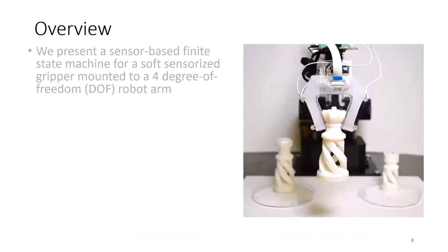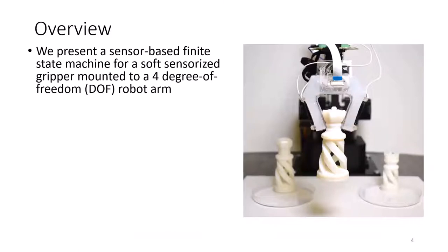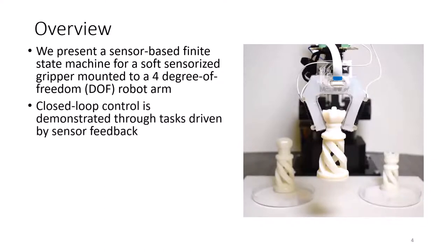In this work, we present a sensor-based finite state machine for a soft sensorized gripper mounted to a four-degree-of-freedom robot arm. To give a quick definition, a finite state machine is a simple control scheme that consists of a set of states, with transitions between states directly determined by inputs. Closed-loop control is demonstrated through tasks driven by multimodal sensor feedback. The three tasks accomplished by the system are scanning, grasping, and sorting.